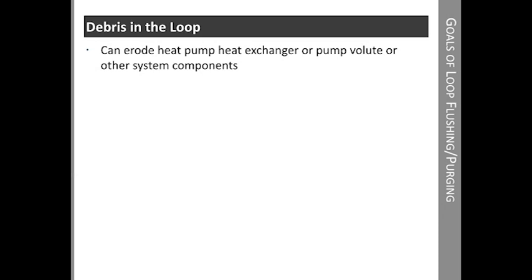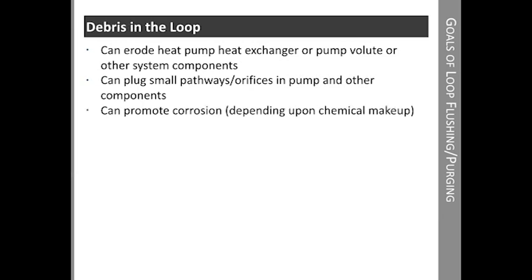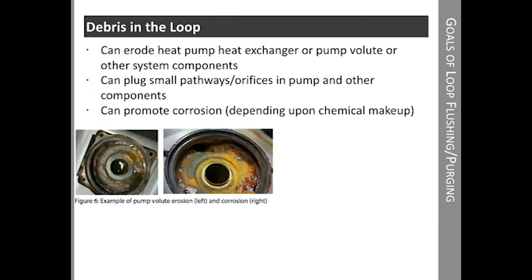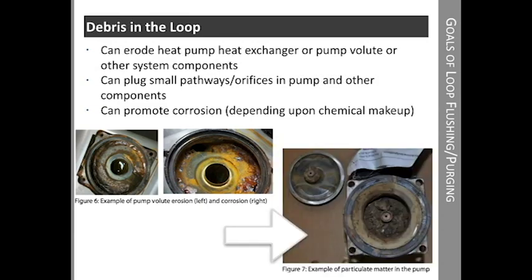Now that we've discussed the problems with air in the loop, let's talk about debris in the loop. Debris in the system can become abrasive. It may erode the heat pump exchanger, pump volute, or other system components, resulting in leaks or component failures. Debris can also plug small pathways or orifices in the pump and other system components. Depending upon chemical makeup, debris can even promote corrosion. The picture on the left is an example of erosion — you can see the wearing of the volute as sand has worn down the material. On the right is an example of corrosion in the system. This picture is an extreme case of debris in the system; in this case, the debris has resulted in the pump shaft breaking.